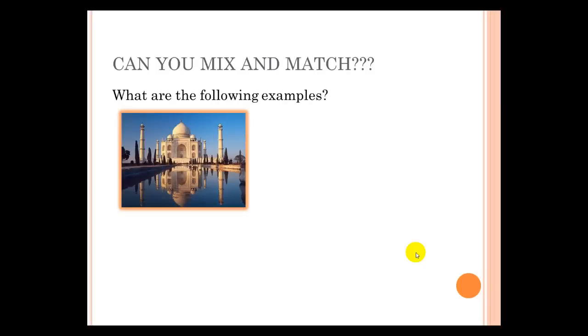Can you include more than one type of structure in a building? Absolutely. The Taj Mahal in India is part a frame structure, because of the dome, and part of it is a frame structure. You can see that in the arches that are here in the building.